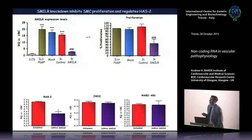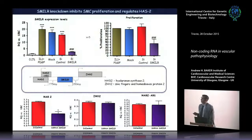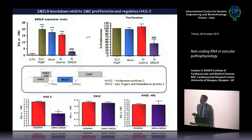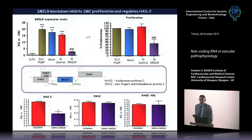Using siRNA against SMILR we can block smooth muscle cell proliferation. SMILR is located on the genome upstream of a gene called HAS2 — previously shown to be involved in PDGF-induced smooth muscle cell proliferation — and knocking down SMILR also knocks down HAS2, which lies 775 kilobases away. HAS2 also has its own antisense lncRNA that regulates it, but SMILR and that antisense lncRNA appear to work separately to regulate HAS2.